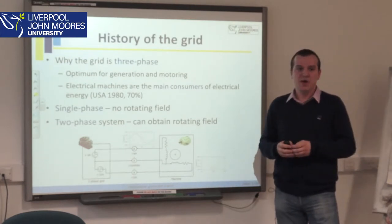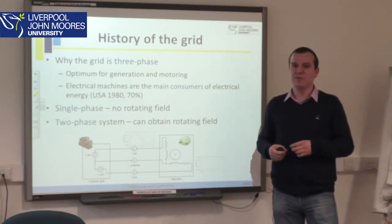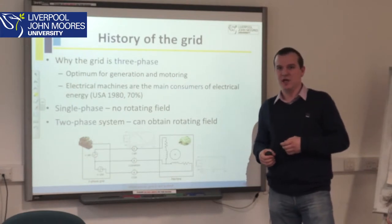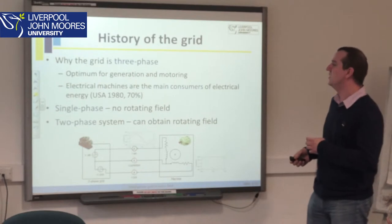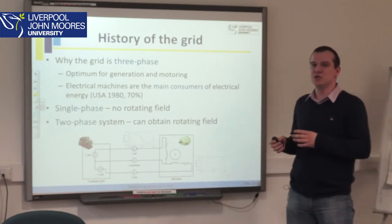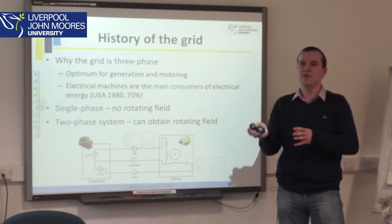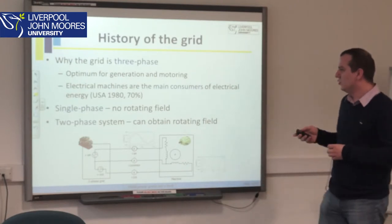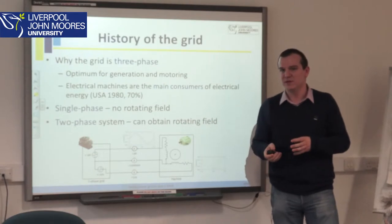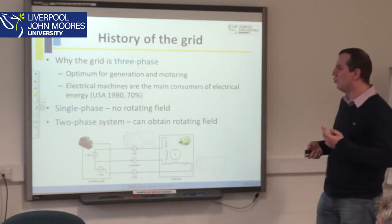Why do we have a three-phase grid? Why not single phase or two phase? The main reason comes from electrical machines, which are the main producers and consumers of energy — in developed countries more than 70% of produced energy is used by electric machines. All electric machines need a rotating field to make a rotor or magnet spin. With a single-phase system this is not possible. For single phase we also need one transmitting and one returning lead — two wires.